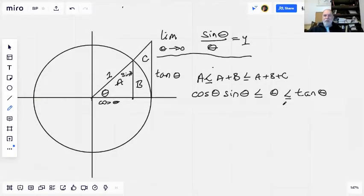Now we'll take the reciprocal of everything here, and when we do that we're going to need to flip the inequality as well. So the reciprocal of cosine times sine is going to be secant times cosecant.